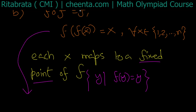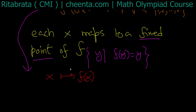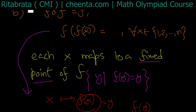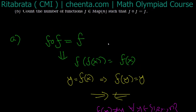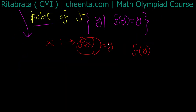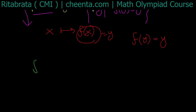If x maps to f(x), then f(x) is a fixed point of f. If I set y = f(x), then f(y) must equal y, because f(f(x)) = f(x). So for each x, x maps to a fixed point of f. The function is almost entirely determined by the fixed points of f. Let's assume that f has k fixed points.